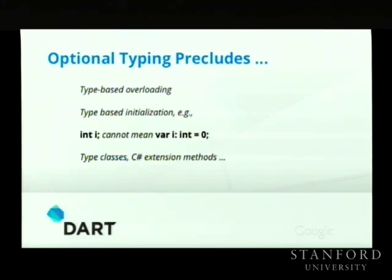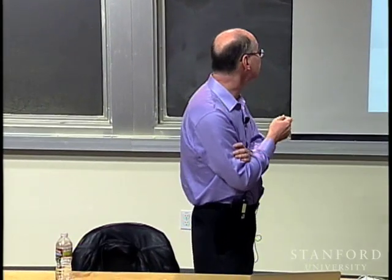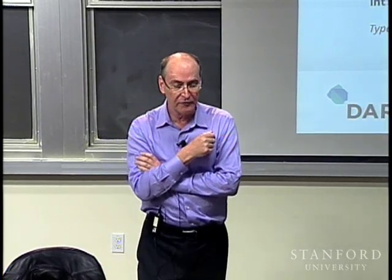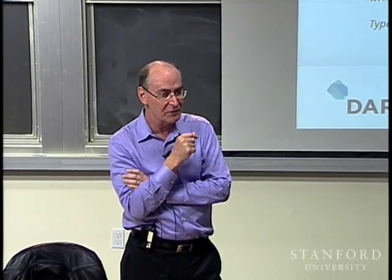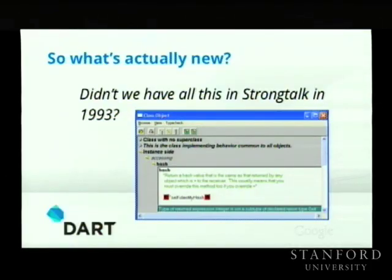There are things you can't do with optional typing — certain language constructs you just can't have. Type-based overloading in Java, for example, where what you call depends on the static types you wrote — we can't do that, because it would violate the core idea that types don't affect semantics. We also can't decide how things get initialized based on the type declaration. One of the few examples I'd actually want is type classes, as in Haskell. But as I said, it's done — not many people paid attention 18 years ago, so we can get away with doing it again. We think we're ready for the mainstream.